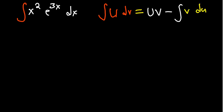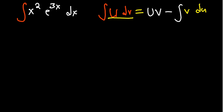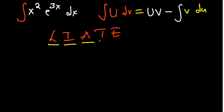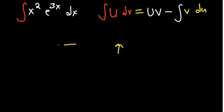According to this, one of them is supposed to be u and the other dv. We use LIATE to choose u — we prioritize: Logarithms, Inverses, Algebraic functions, Trigonometric, Exponentials. In this case, x squared is algebraic and comes before exponentials, so we consider it to be our u.